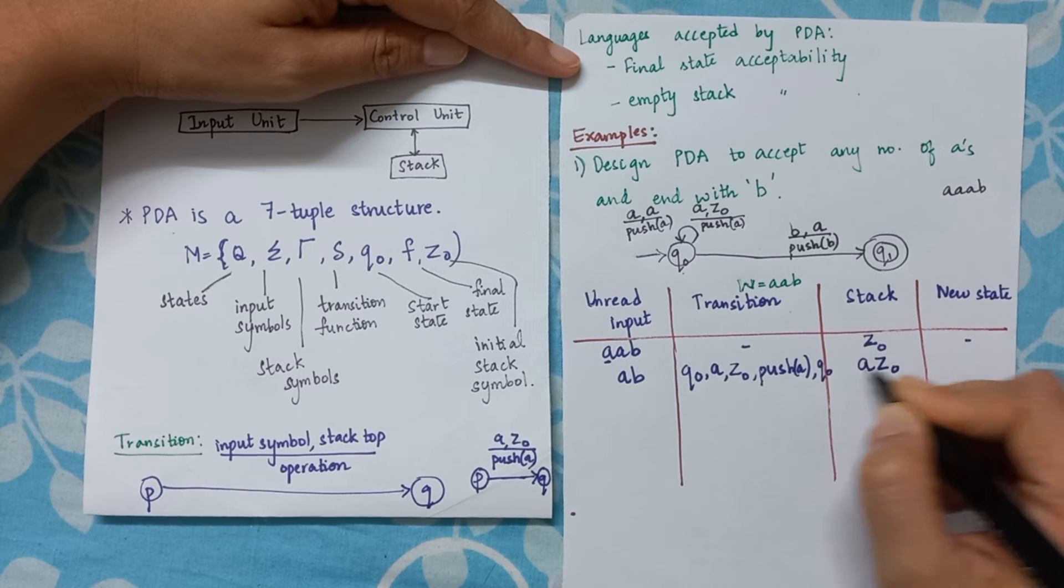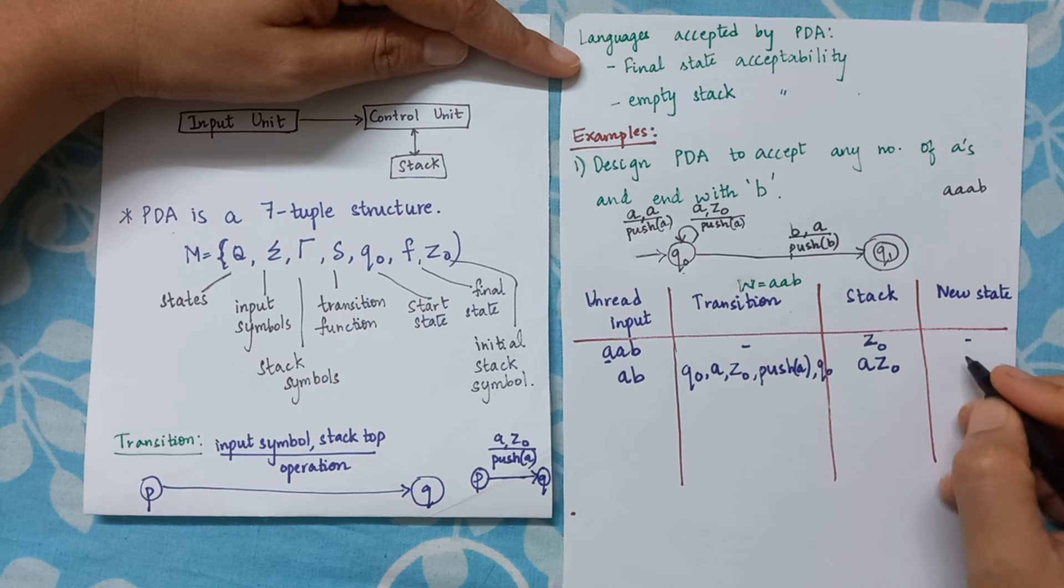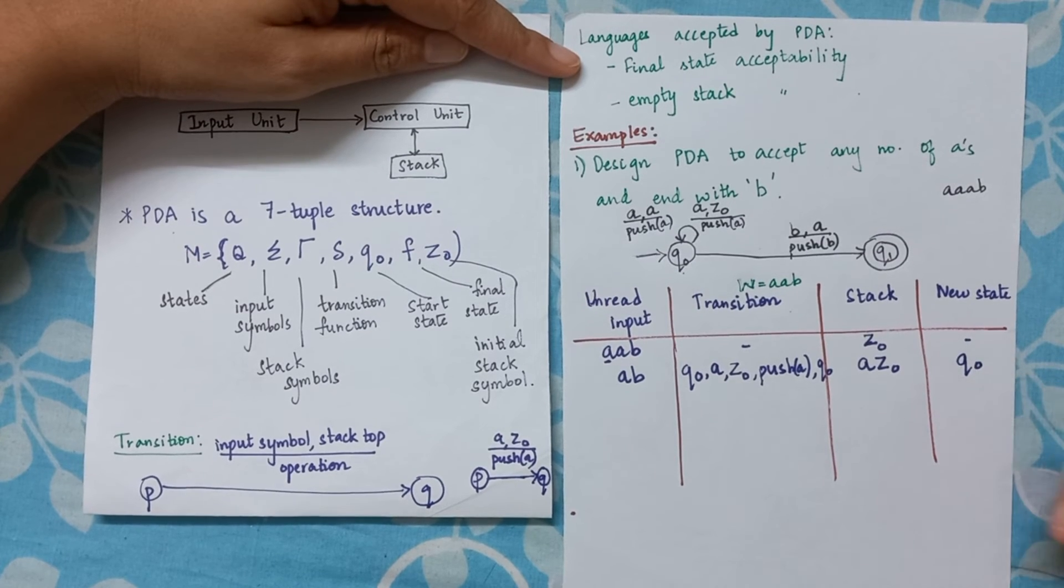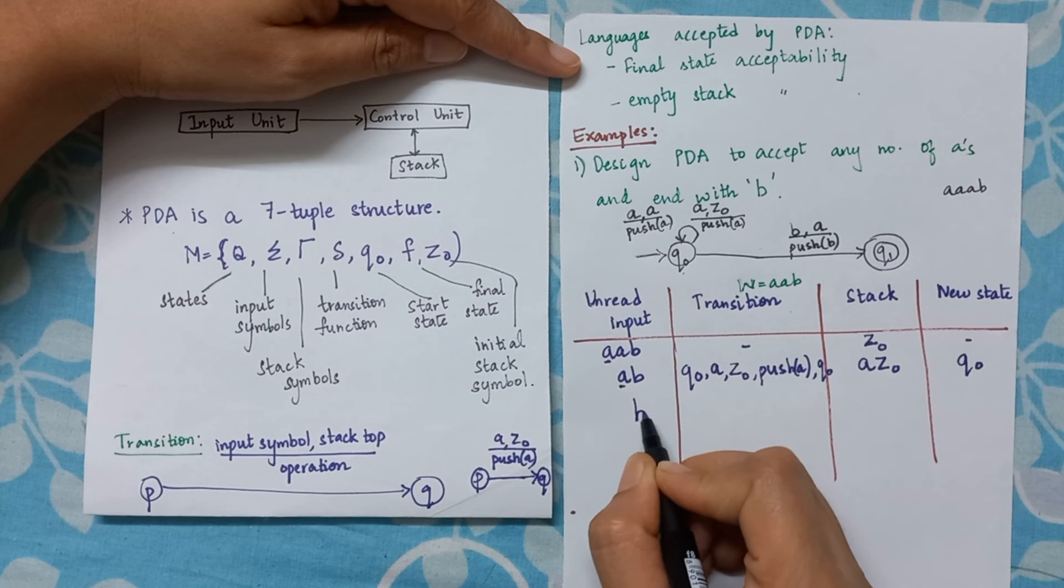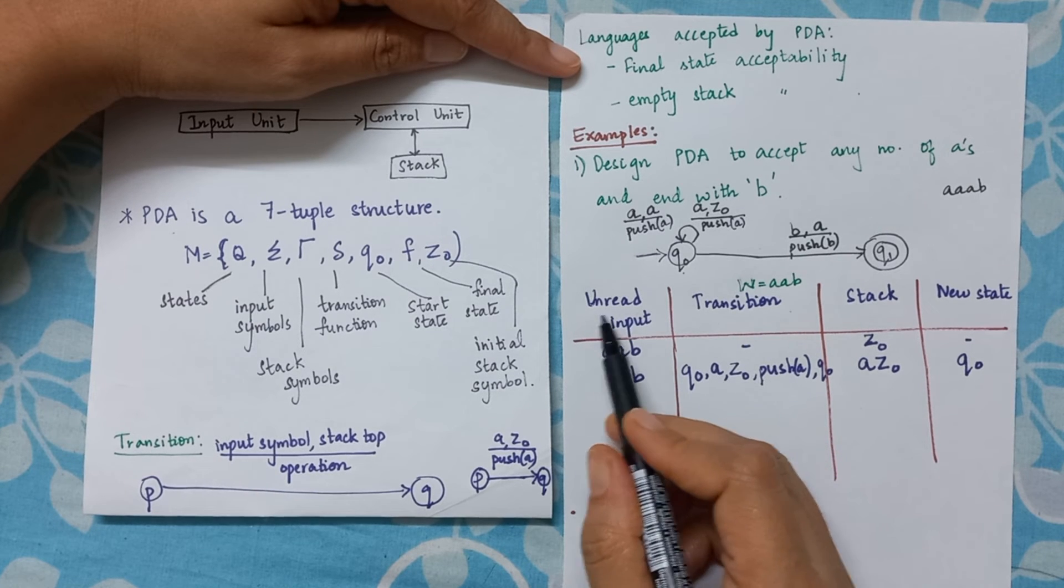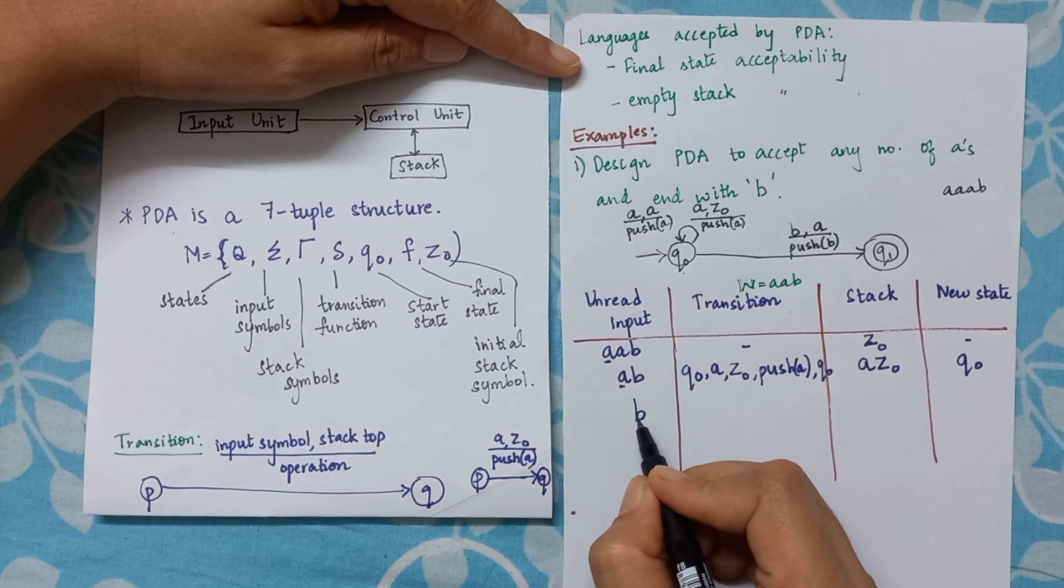Now I am reading this particular symbol, so that is why the heading says unread input. So at this state only 'a' is read, 'b' is not read. I will be on q, I am continuing from q0, I read 'a'.